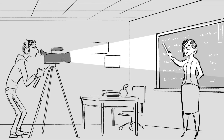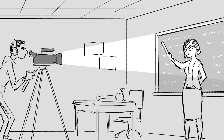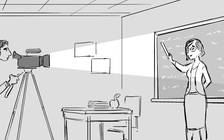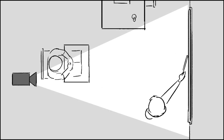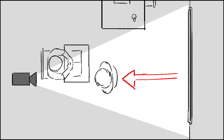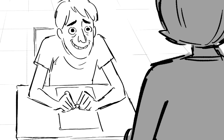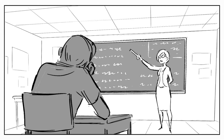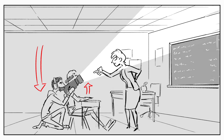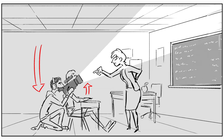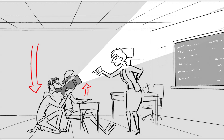First, we change the framing — which part of the scene you see through the camera's lens and from what perspective. And we change the staging — the positions of the characters in the classroom and where the action occurs. In this case, staging increases the drama between the characters. We also change the camera motion — how the camera moves in relation to the characters and the action.